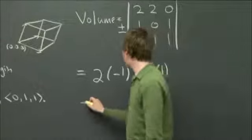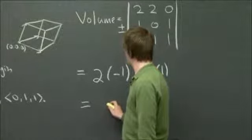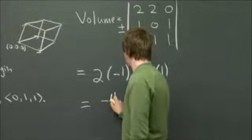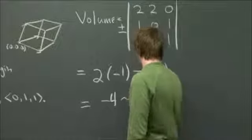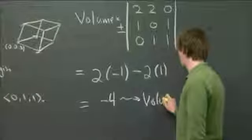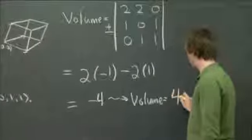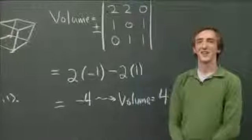So what that tells us is that our determinant is minus 4. But that tells us that our volume is plus 4. And I'll leave it at that.